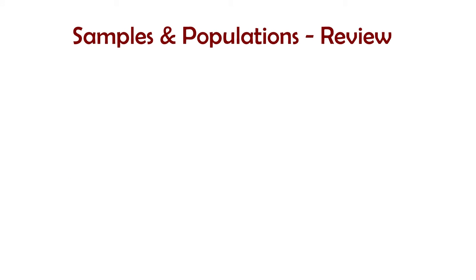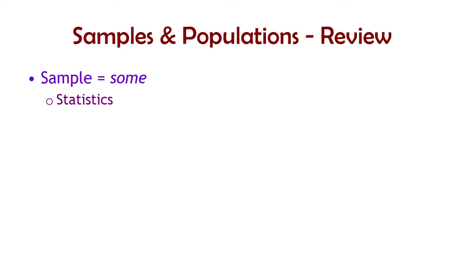Just to review what we know about samples and populations: a sample is just some of the observations available from some larger potential group of observations. From a sample, when we calculate some numbers like a mean, median, standard deviation, or something like that, those numbers are called statistics - just as a terminology issue. And from a population, we have all the possible observations.